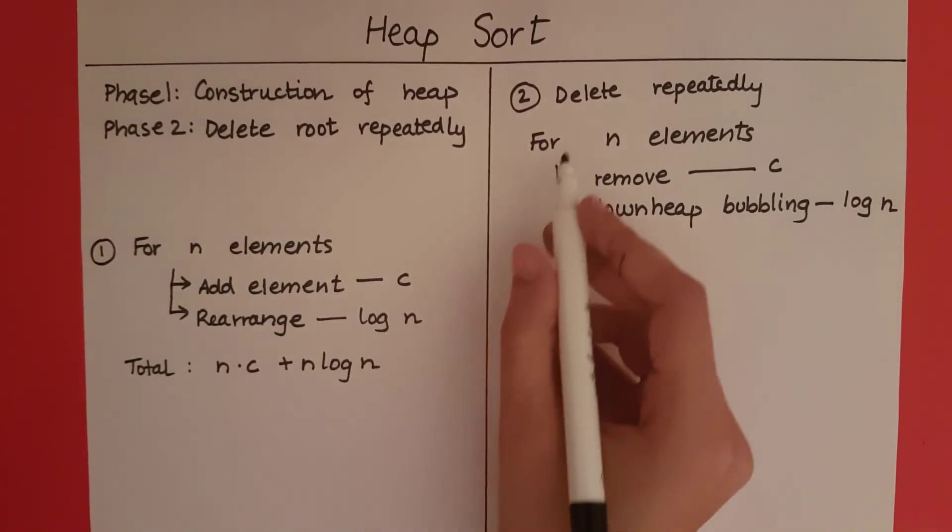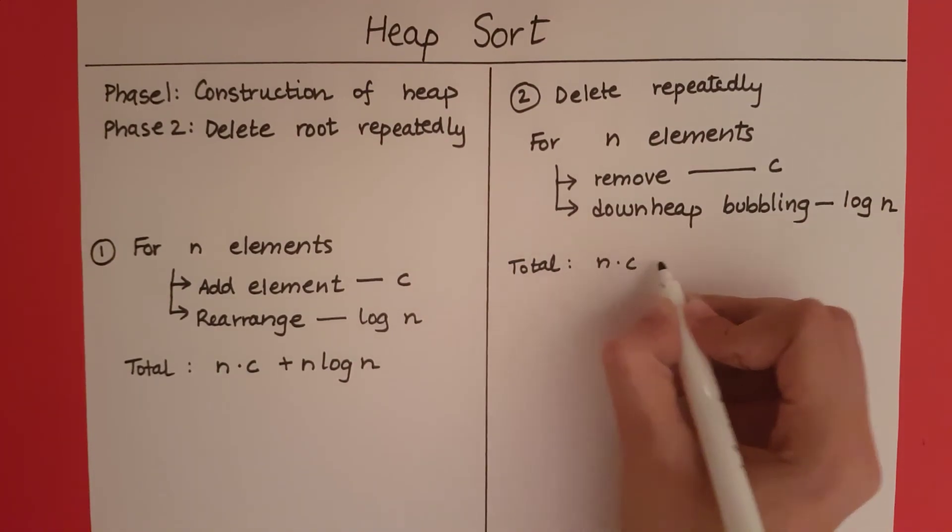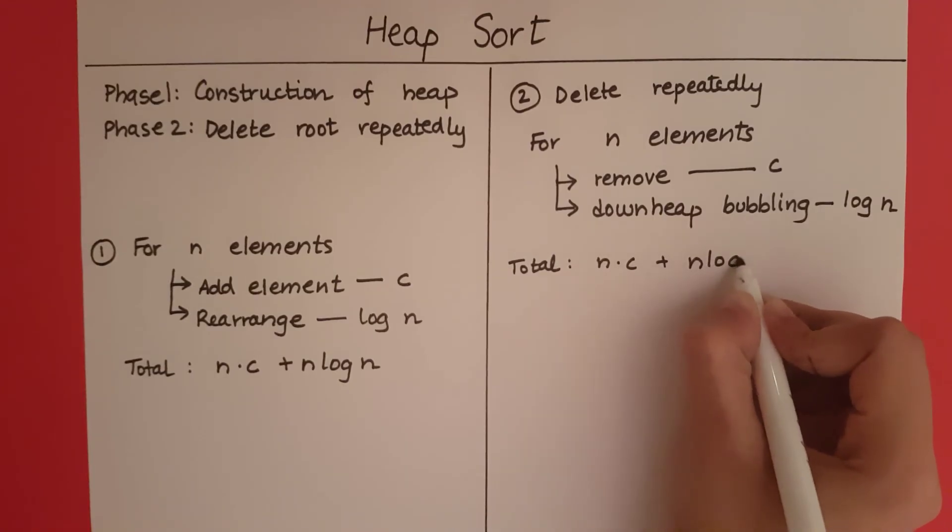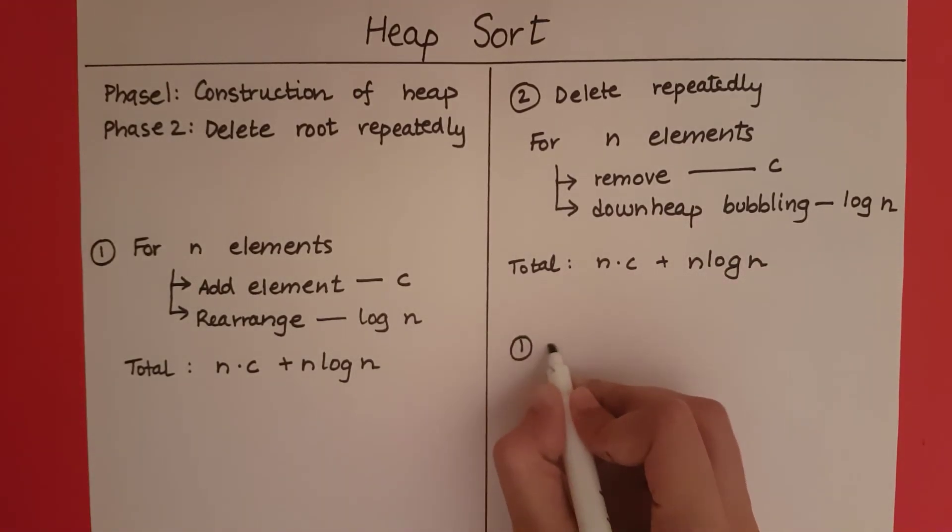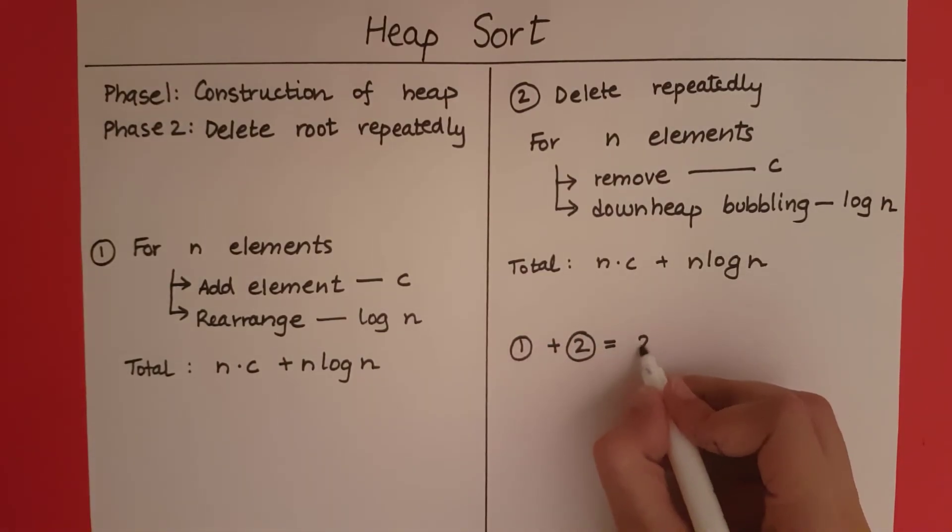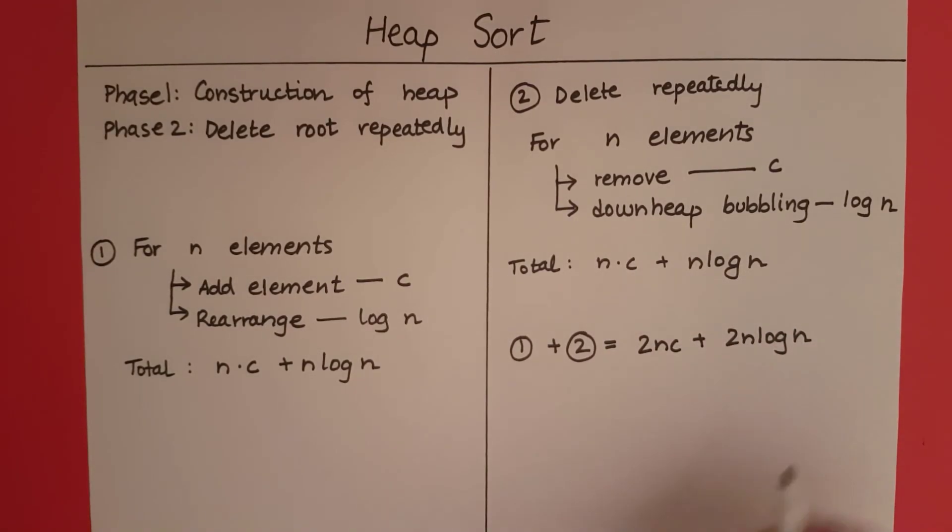So now what total time does this take? n into c plus n log n. So given phase 1, after that we do phase 2, what is the total time we are taking? 2nc plus 2n log n. So this is going to be the running time in worst case.